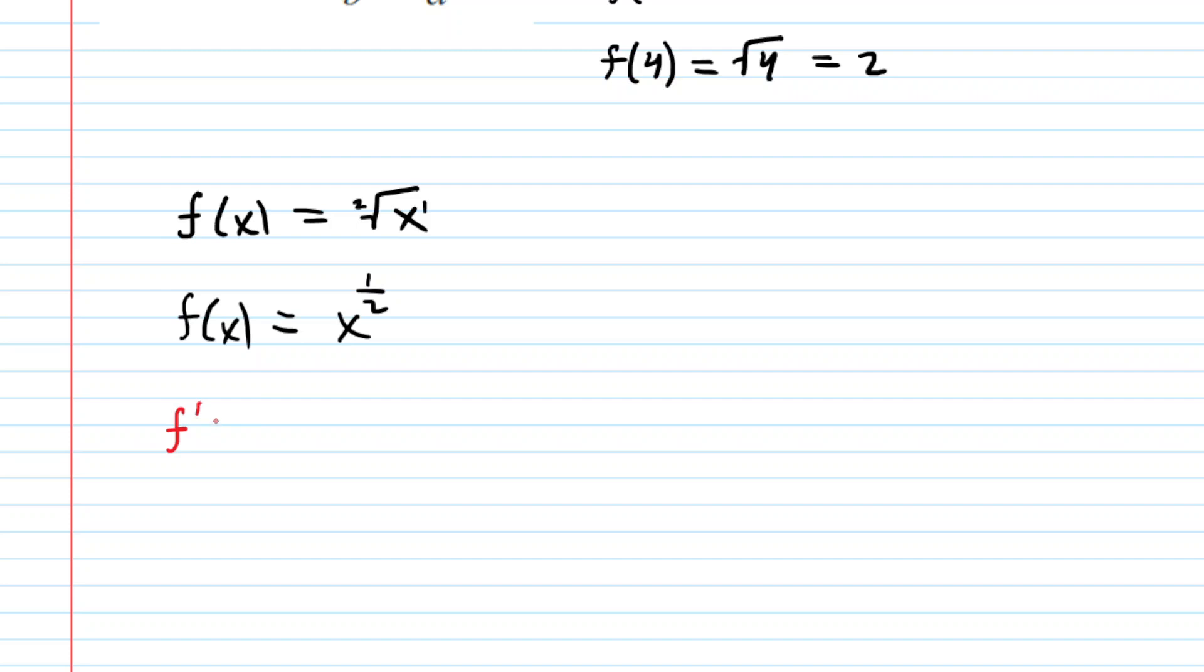And once we have that we can easily calculate the derivative using a power rule. So we're going to say f'(x) equals, and then the power rule tells us to kind of drag the power down in front, so we'll have 1/2 multiplied by x, and then we have to subtract 1 from the original exponent. 1/2 minus 1 of course is negative 1/2.